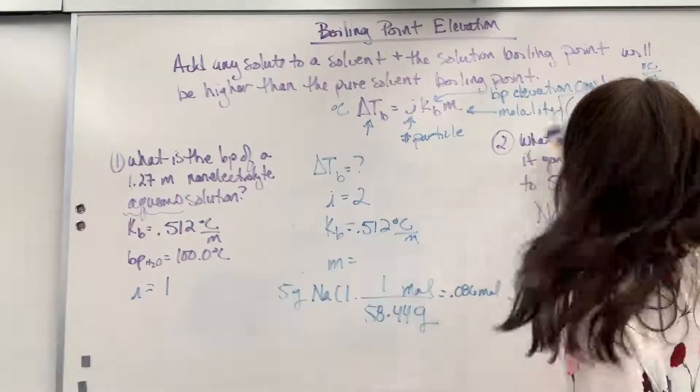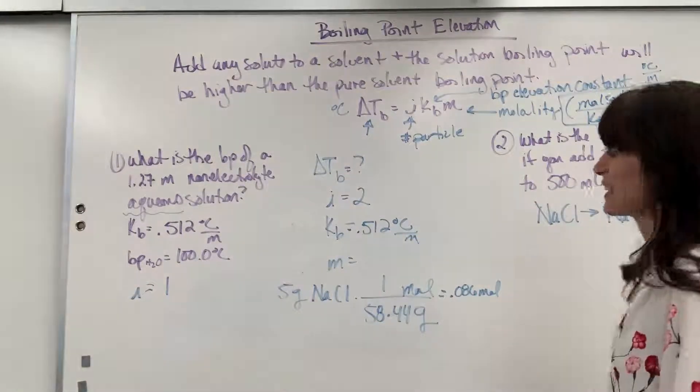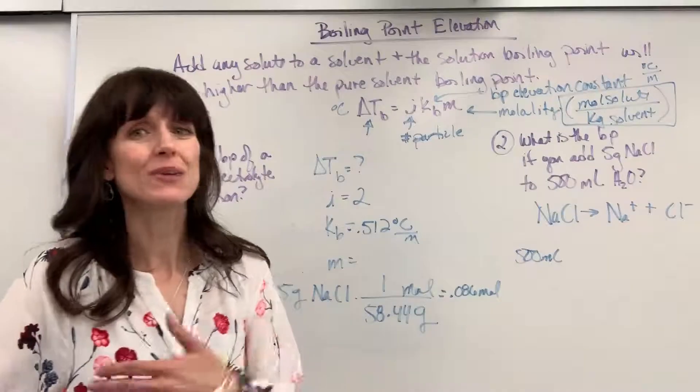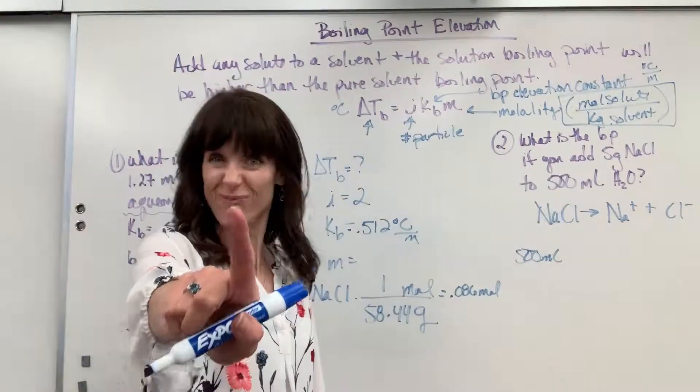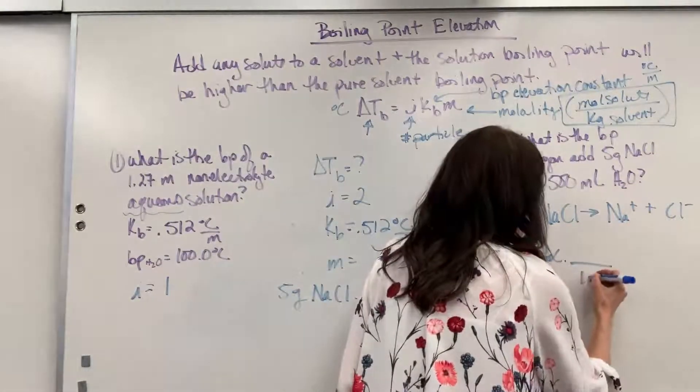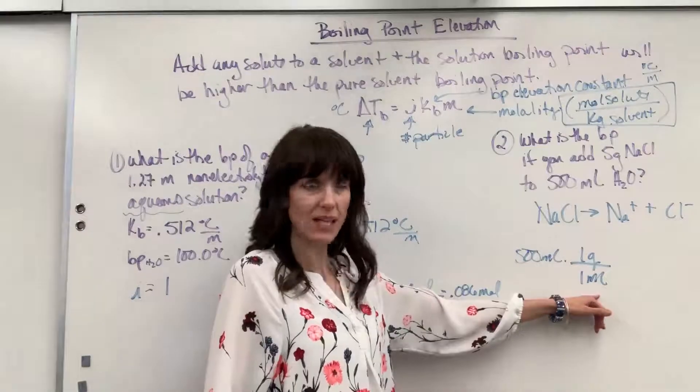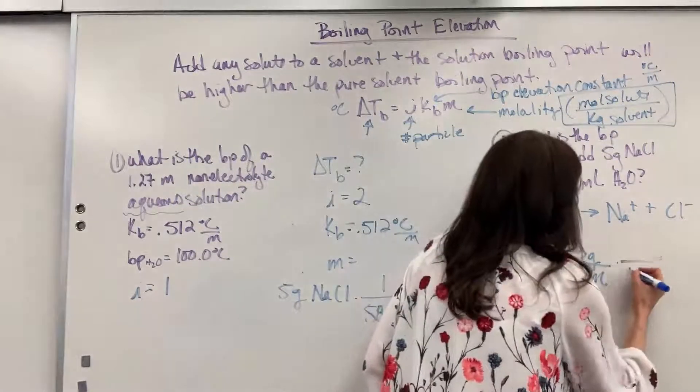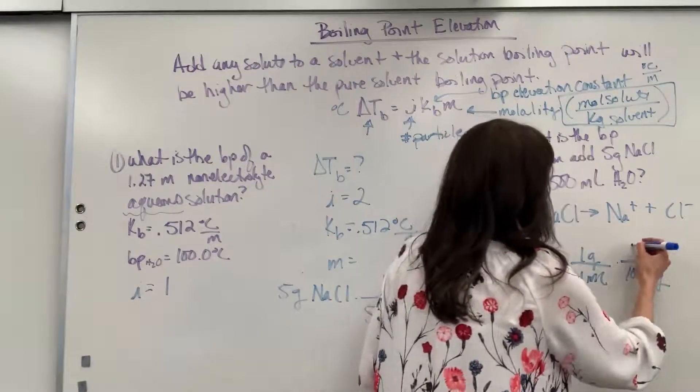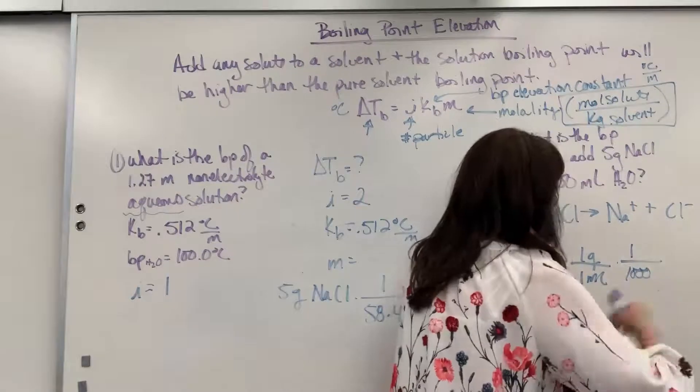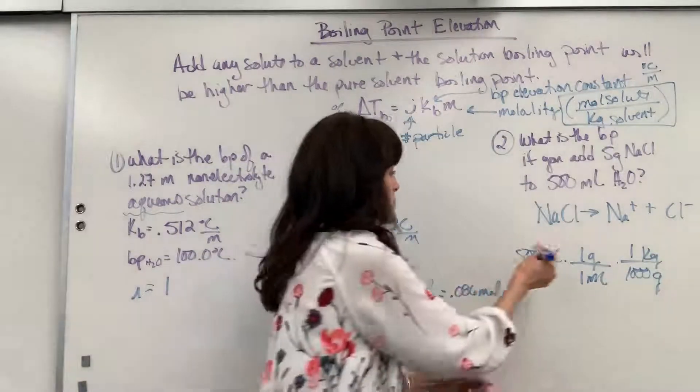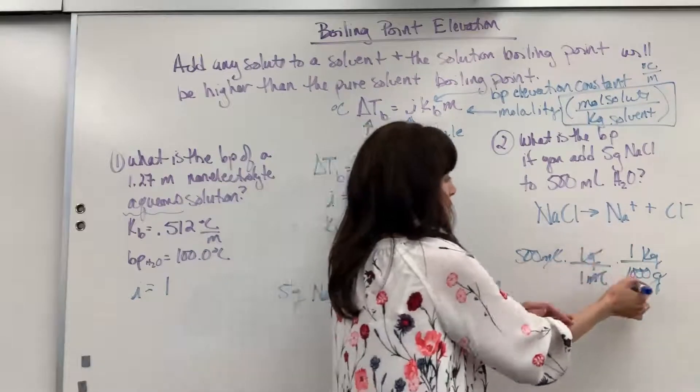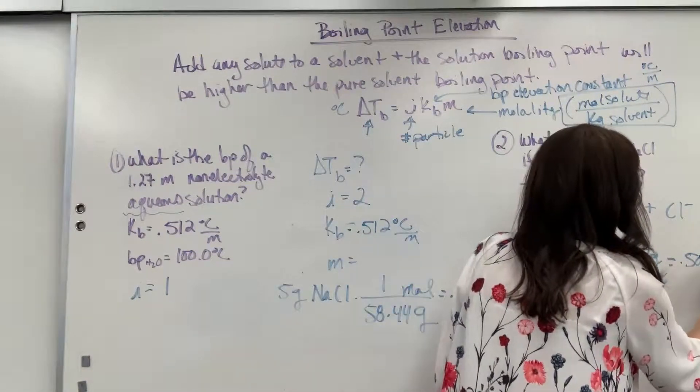We have the moles, the numerator. Now I've got to get the kilograms. We have 500 mils of water. Let's use the density of water - this is a trick we use all the time in chemistry. The density of water is one, so one mil weighs one gram. Notice I put mils on the bottom so it cancels. Now I'm going to do one more conversion because we need kilograms - there are a thousand grams in one kilogram. So mils cancels, gram cancels, and we're left with kilogram. 500 times one divided by one times one divided by thousand is going to be 0.500 kilograms.